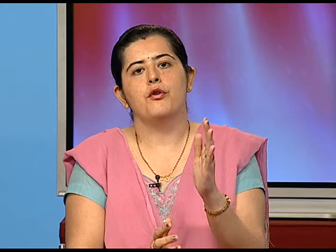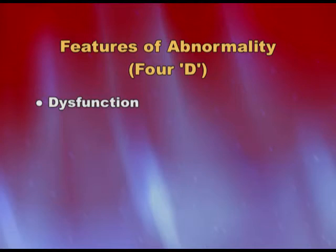There are four D's in abnormality that we have to consider: dysfunction, danger, distress, and deviance. Danger means a person who is going to be of some harm to society or to himself — self-aggression, suicide, or harming somebody else, violence on outside figures. If all four D's are present, we consider that person as having traits of abnormality.